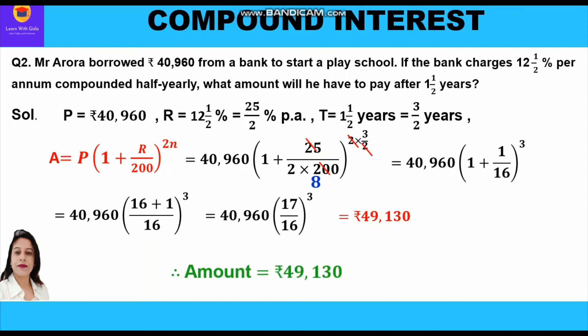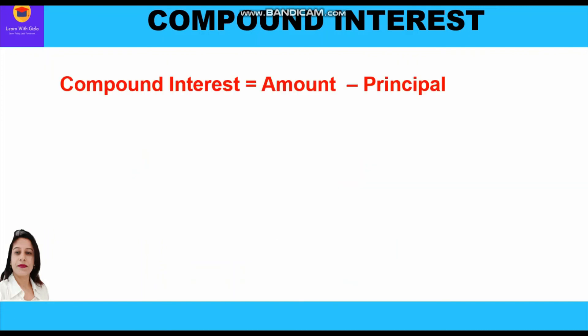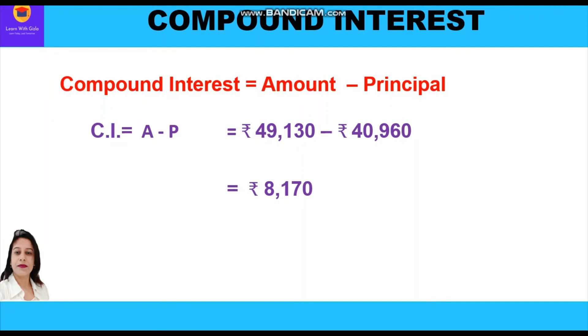You can pause the video and answer in the comments: what is the interest Mr. Arora will have to pay after one and a half years? Compound interest = A − P = 49,130 − 40,960 = ₹8,170. So Mr. Arora will have to pay ₹8,170 in compound interest to the bank after one and a half years.